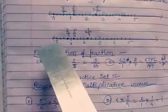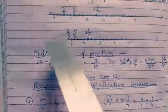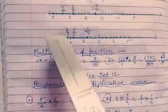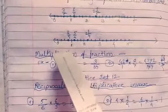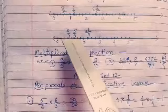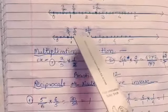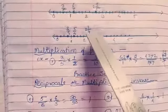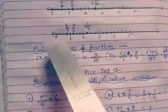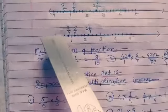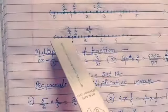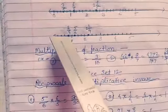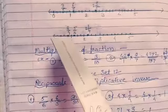So we make 4 parts. From 0: 1, 2, 3, 4 — 1 is here. Again 1, 2, 3, 4 — 2 is here. Again 1, 2, 3, 4 — 3 is here. Now for 3 upon 4: count 1, 2, 3 — darken it. This is 3 upon 4.